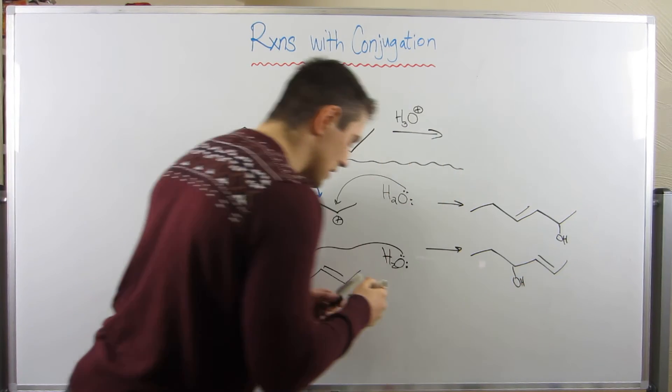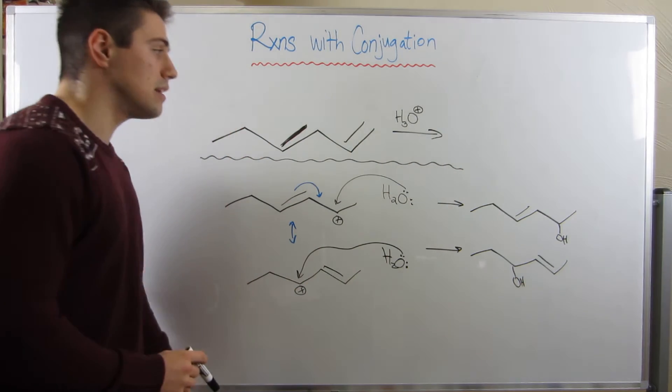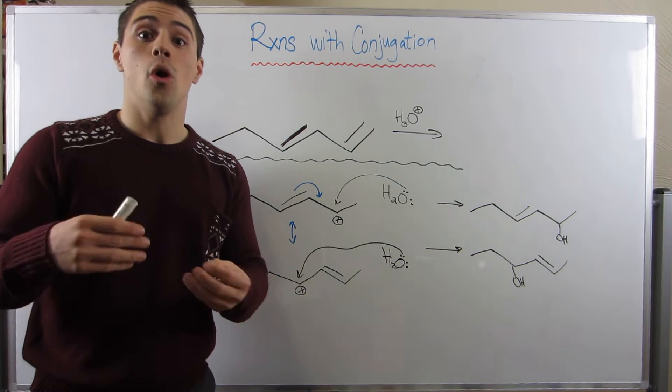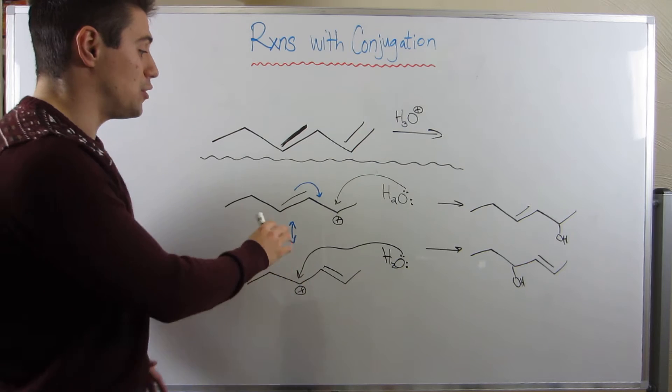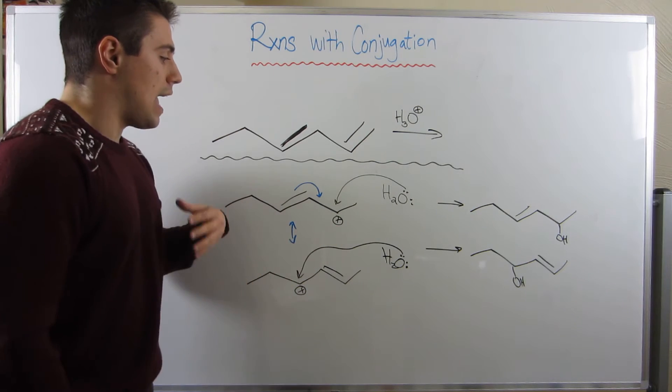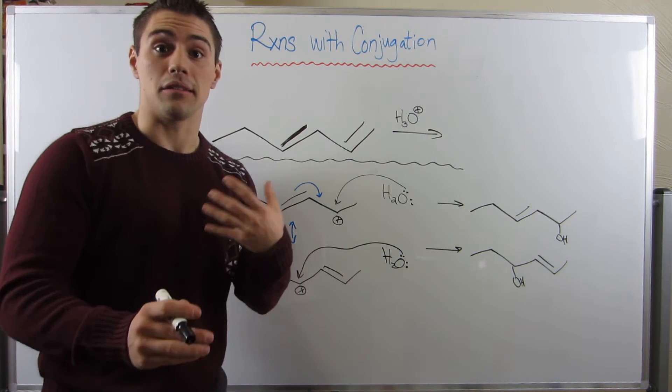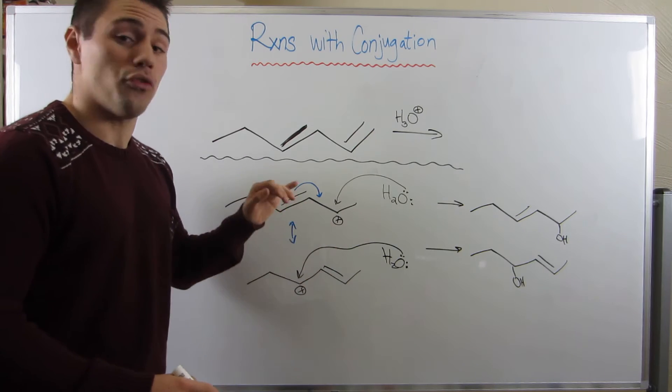So, you can see that, so the double bond would be right here. You can see that with conjugated systems, if we ever have a mechanism that involves a negative charge, or a positive charge, or a radical, if you ever have some type of intermediate, and it forms a charge, and you can make it allylic, that is the charge that will form.